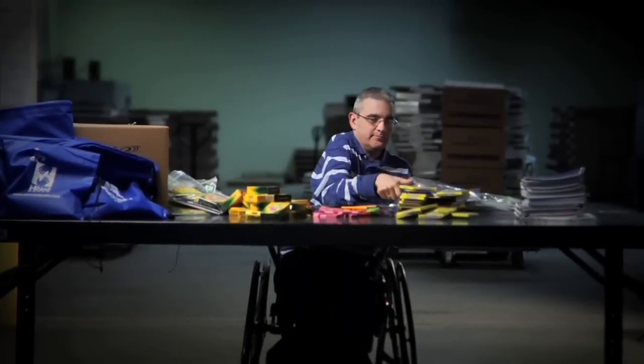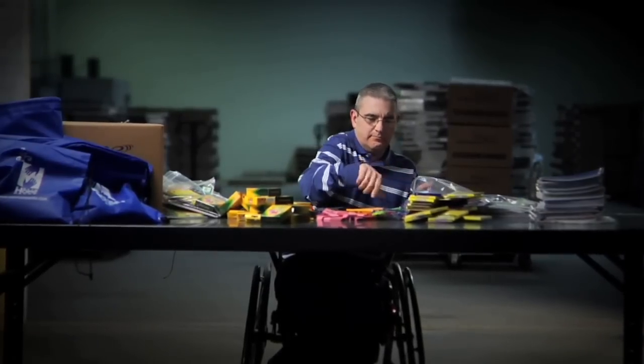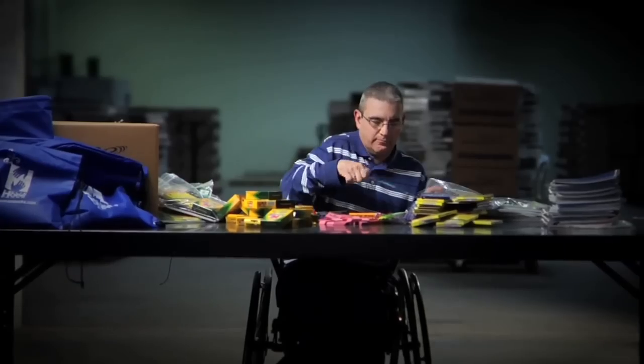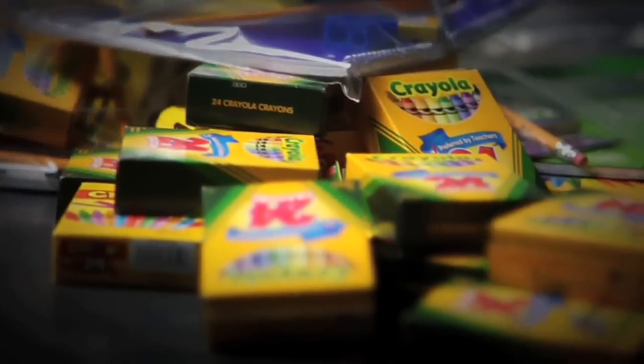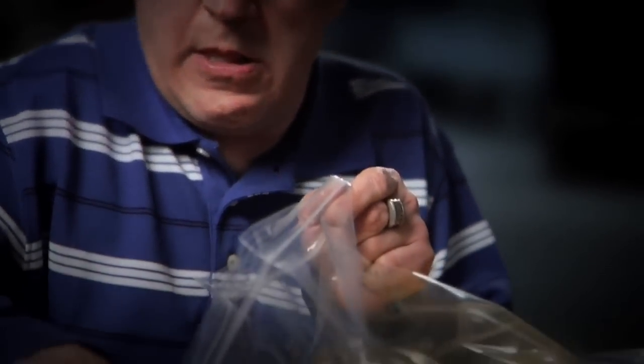Meet John Wren. John is an adult in Elam's Adult Services program. He is assembling an Elam Hope Pack. This Elam Hope Pack contains essential school supplies for a child whose family can't afford them.